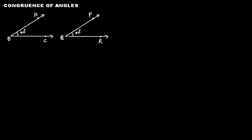Vertex Q will exactly cover vertex B, and arm QR — let me draw it — when you try to cover this, it will come something like this. In this case, arms are also equal. So QP is equal to AB and QR is equal to BC. B will be covered by Q, P will cover A, and C will be covered by R.